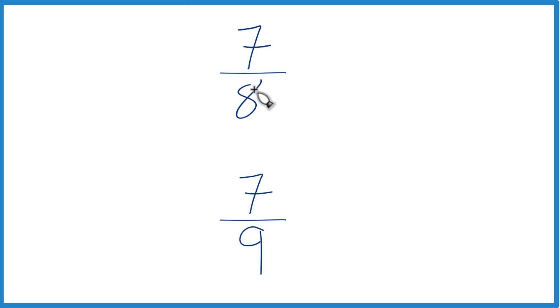But let's find a common denominator. We have 8 and 9. If we had the same denominator, we could just compare the numerators and we'd be done.